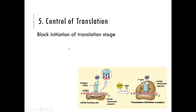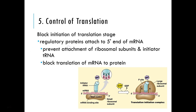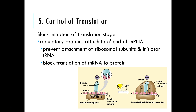Next is control of translation. You can't really speed up or slow down the ribosome — ribosomes are always going at full speed. The only thing you can really do is stop them. You can stop the ribosome from properly forming around the mRNA, but there's no real mechanism to just slow it down a bit. That's not something the cell does.